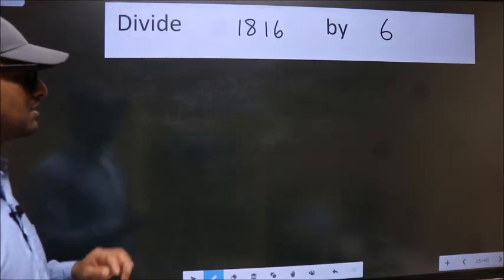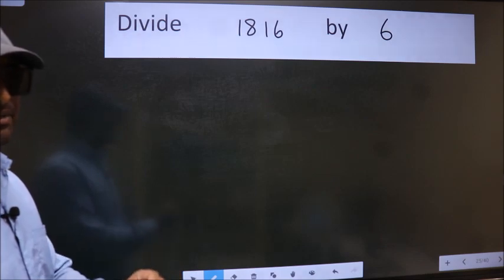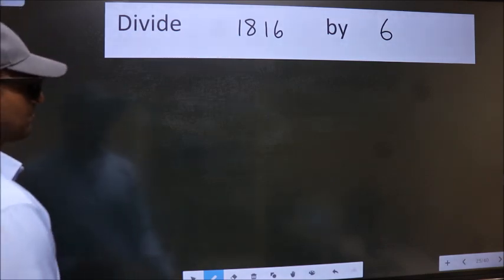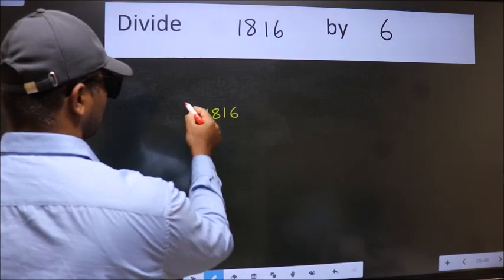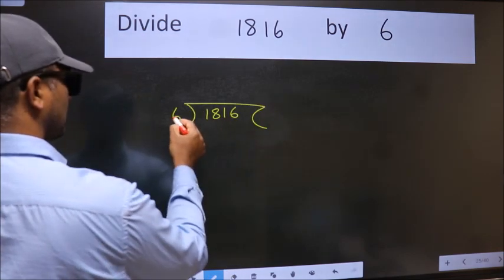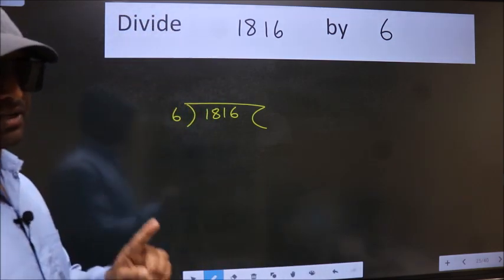Divide 1816 by 6. To do this division we should frame it in this way. 1816 here, 6 here. This is your step 1.